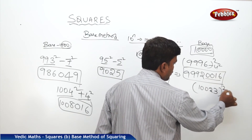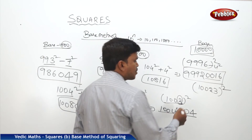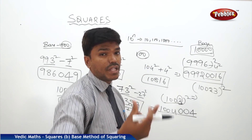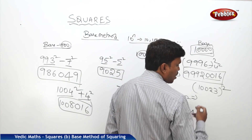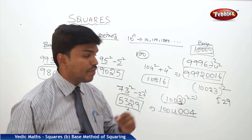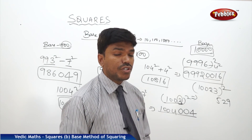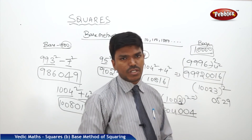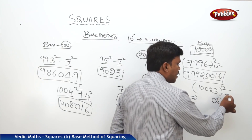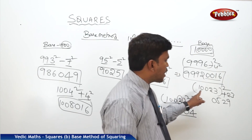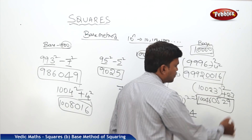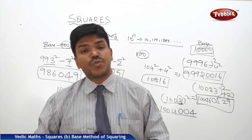For a number more than 10,000: I need 10,023 squared. Compare with base 10,000 — it is more by 23. What is 23 squared? 529. We need 4 digits on the right side, so write 0529. For the left side, add 23: 10,023 plus 23 is 10,046. So your answer is 100460529.